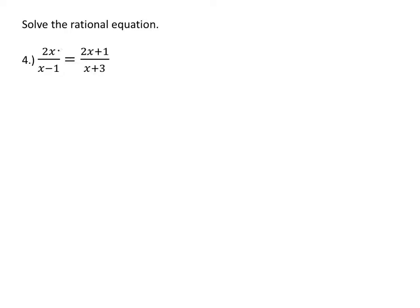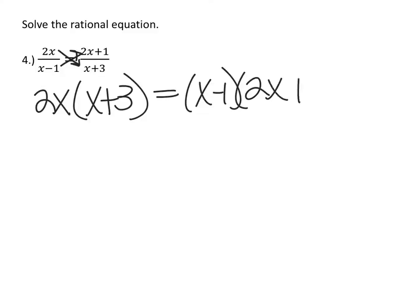So let's do that. If we cross multiply, we have 2x times x plus 3 equals x minus 1 times 2x plus 1.